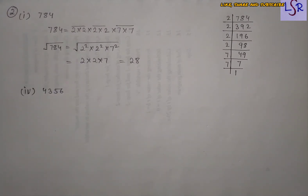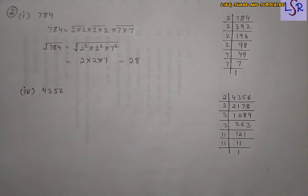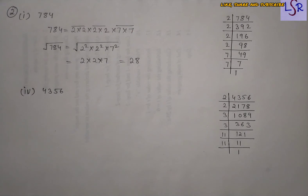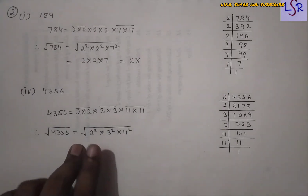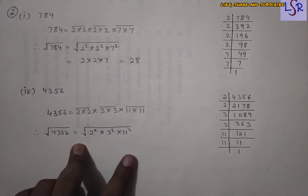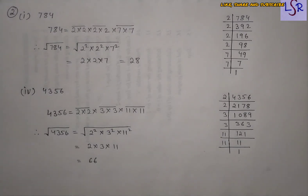Now let's see one more part: 4356. We first find the prime factors of 4356, write the factors in the form of multiples, make pairs, then write in the form of a root. The root cancels out the squares and finally we get 66 as the square root of 4356.